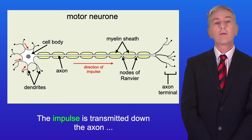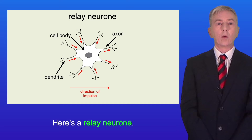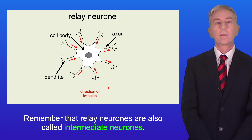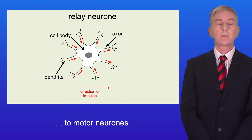Here's a relay neuron — remember that relay neurons are also called intermediate neurons. Relay neurons transmit impulses from sensory neurons to motor neurons. Relay neurons can have multiple short dendrons and short axons.